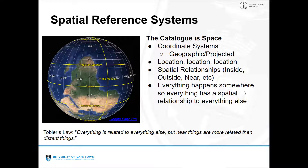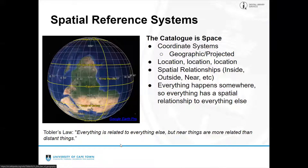Tobler's Law, the first law of geography, states: everything is related to everything else, but near things are more related than distant things. If you think about the world, that's quite true — you're not going to find an intact forest right next to a desert. The land surface changes slowly: the piece of land next to where you're standing is probably quite similar to where you are.